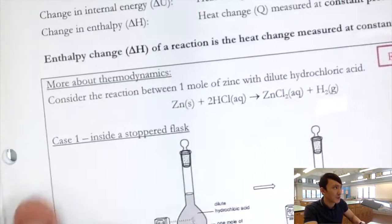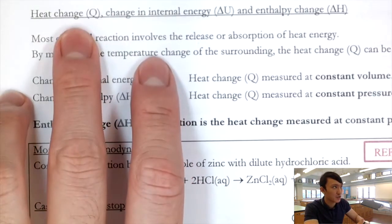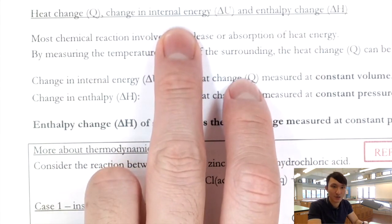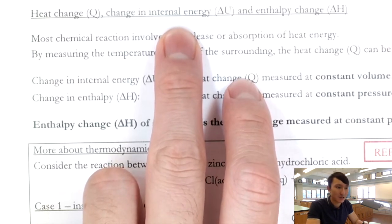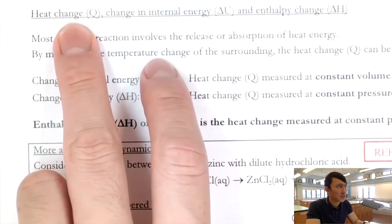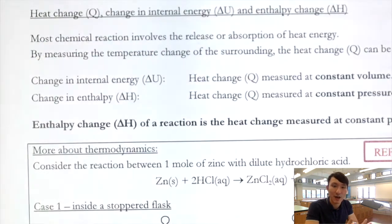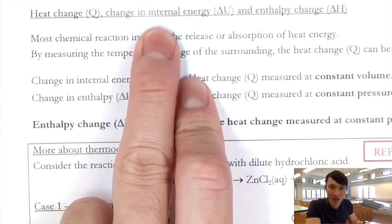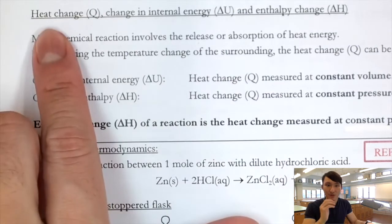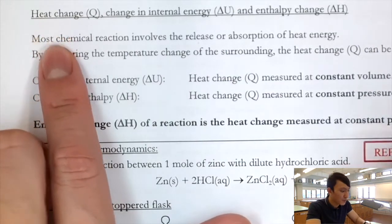We have three energy terms: heat change, change in internal energy, and enthalpy change. When the energy of a chemical species changes, that is the change in internal energy. Heat is the form of energy often associated with an internal energy change — when the internal energy of a molecule changes, it is usually converted into heat energy.